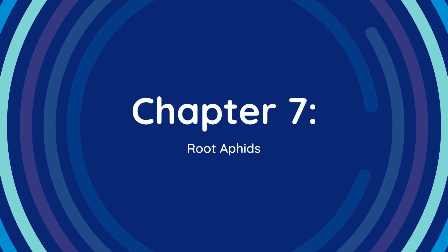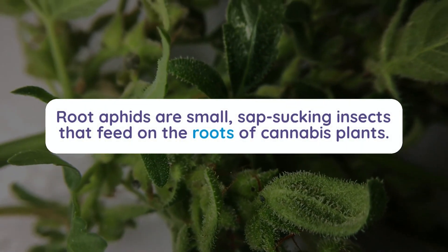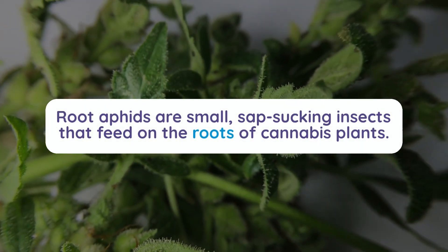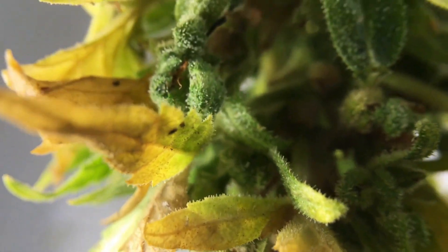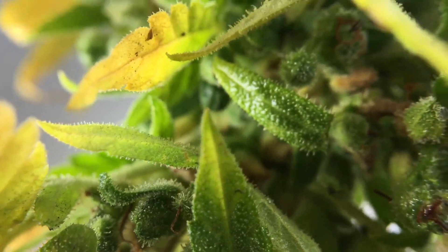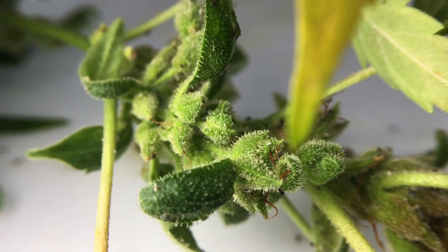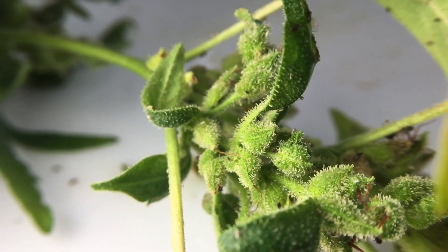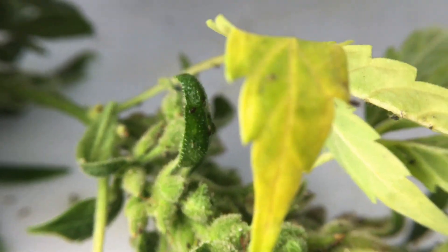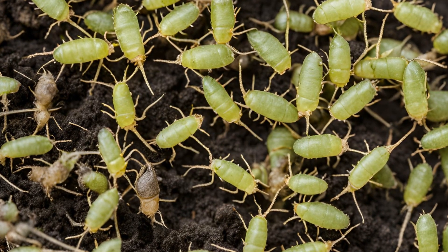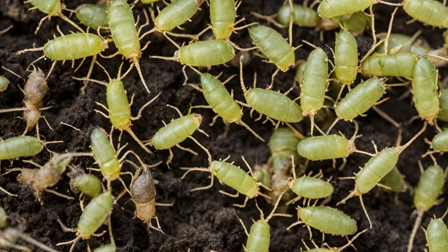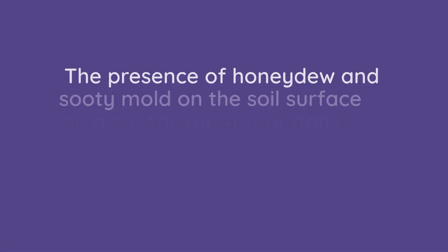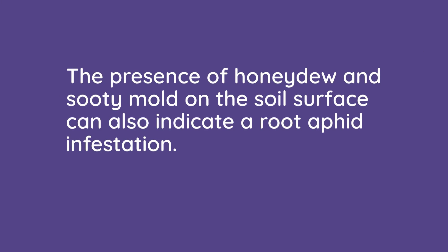Chapter 7: Root Aphids. Root aphids are small, sap-sucking insects that feed on the roots of cannabis plants. They can cause significant damage, leading to stunted growth, yellowing leaves, and reduced yields. These pests are often mistaken for nutrient deficiencies or root rot due to their similar symptoms. Identifying root aphids involves inspecting the roots for small, oval-shaped insects, which can be white, yellow, or brown. The presence of honeydew and sooty mold on the soil surface can also indicate a root aphid infestation.